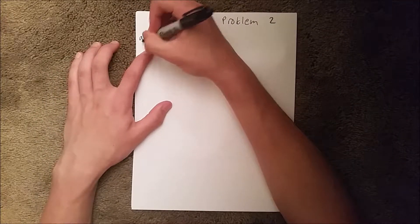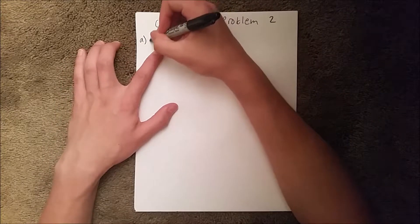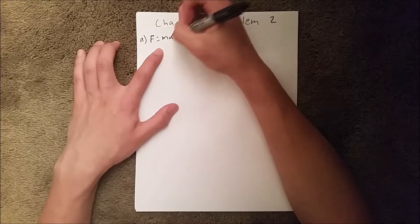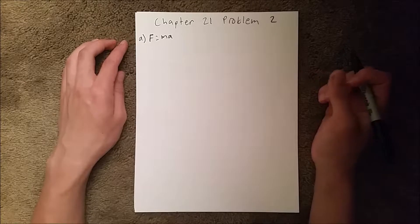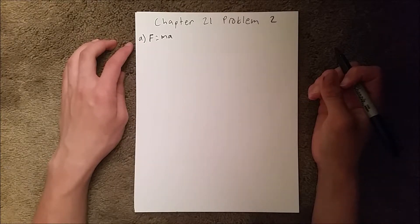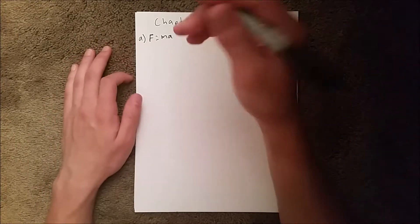So for part A we're trying to find the mass of the other particle. We know that the force on the particle is equal to ma, and since these two particles are attracted to each other, their forces are going to be equal and opposite, assuming that all energy is conserved.